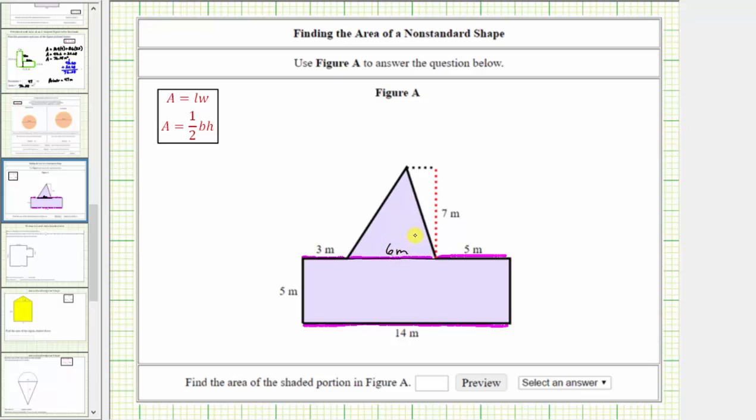Now that we have all the information that we need, the area of the polygon is equal to the area of the rectangle plus the area of the triangle. Using the area formulas, we would have the area equals the length times width of the rectangle plus one-half times the base times the height of the triangle.